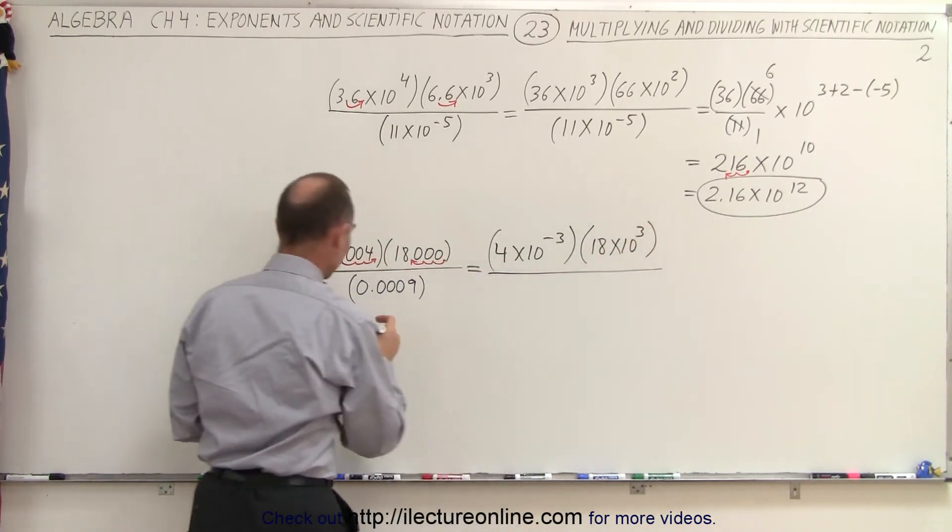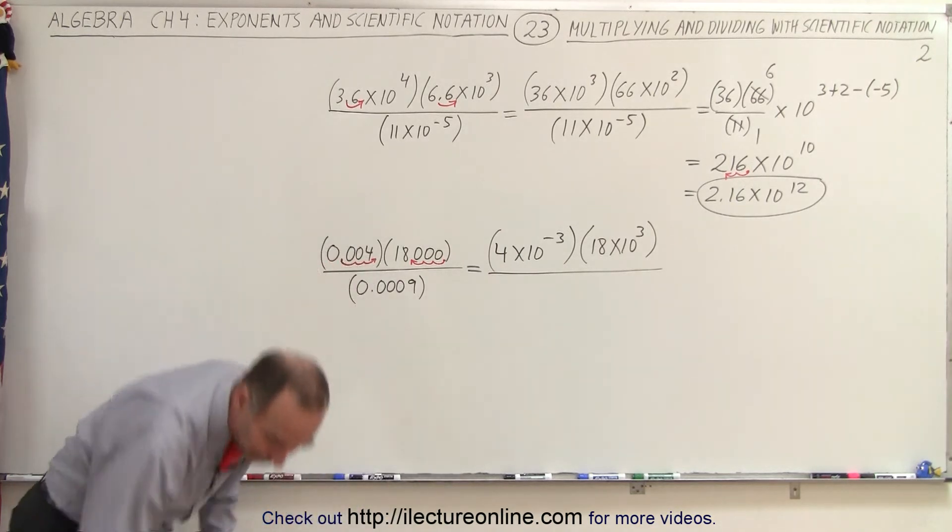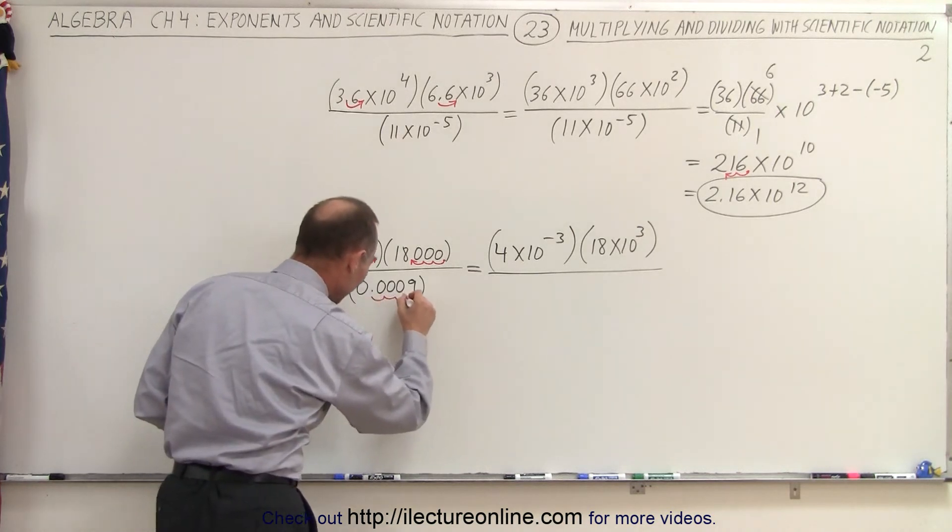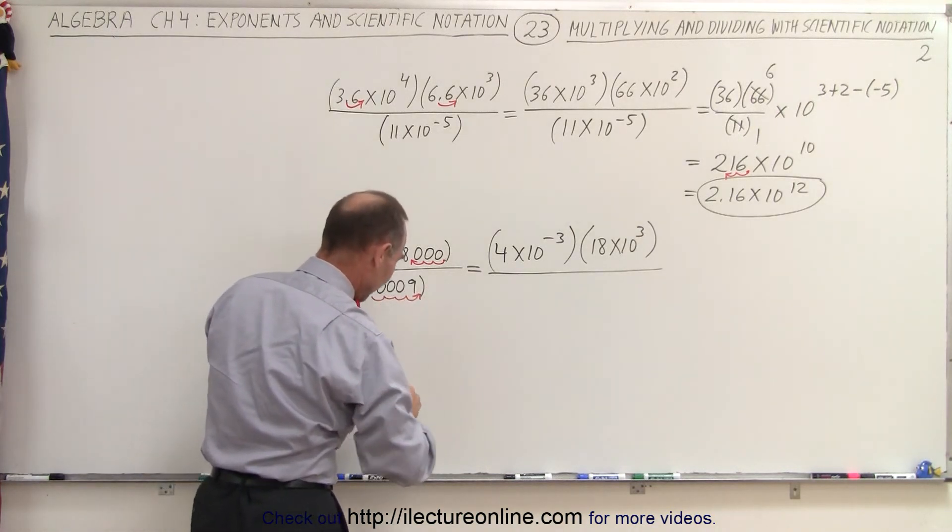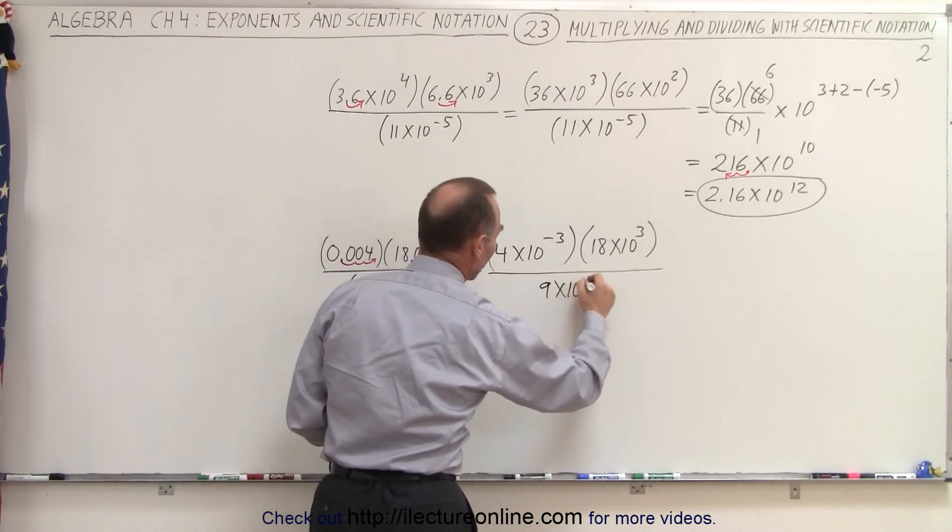And then we divide this by, here we have to move the decimal point over 1, 2, 3, 4 places. And so we write this as 9 times 10 to the minus 4.